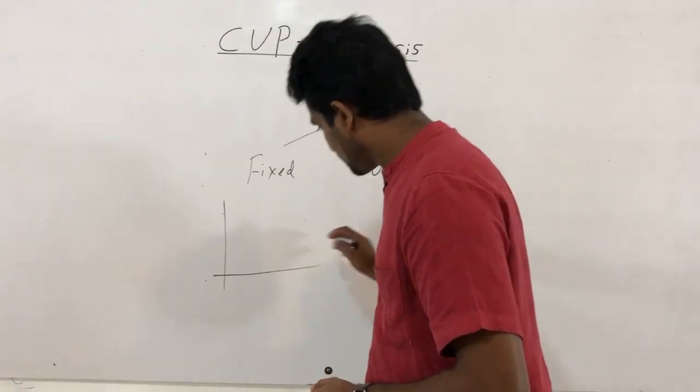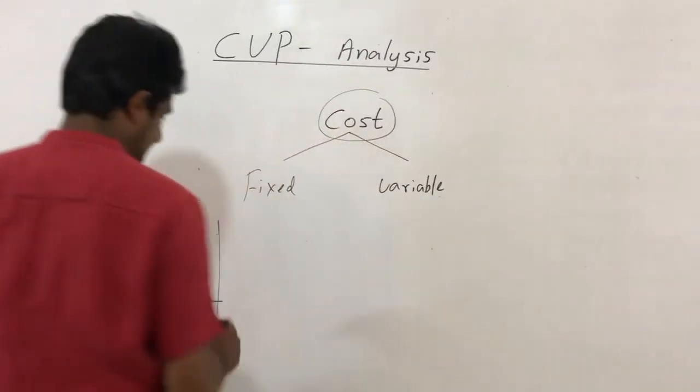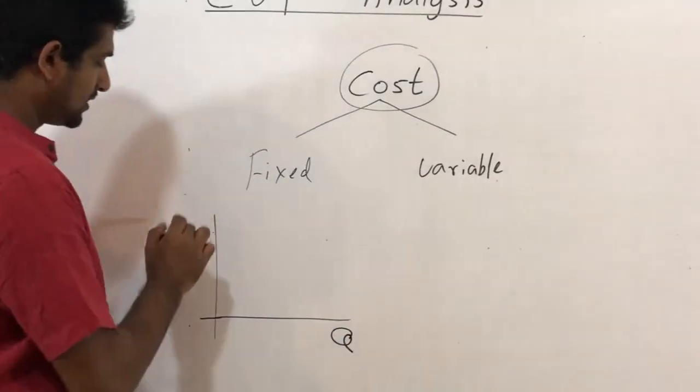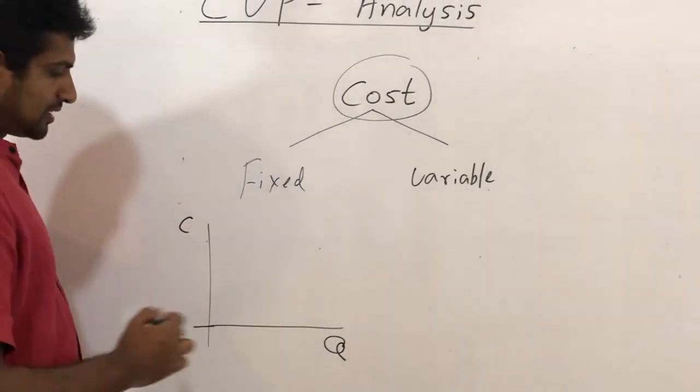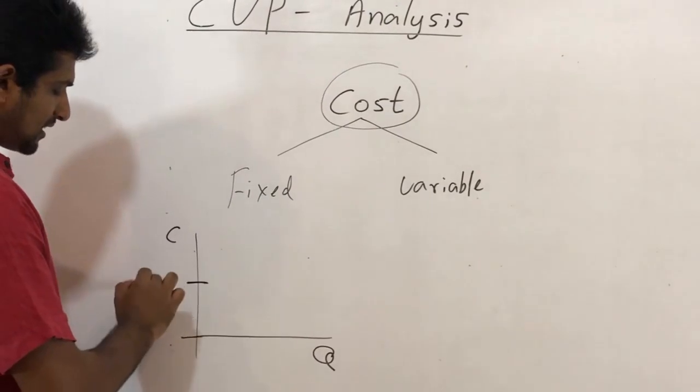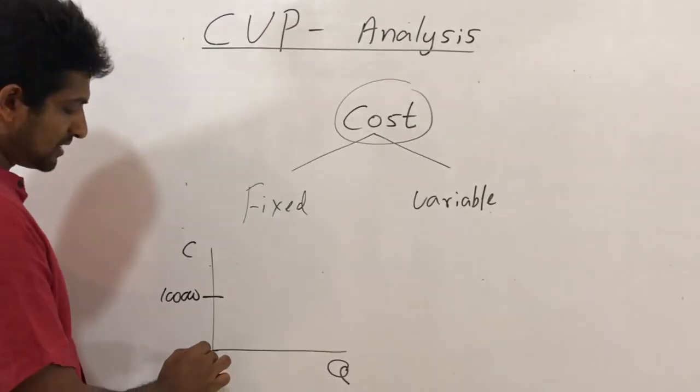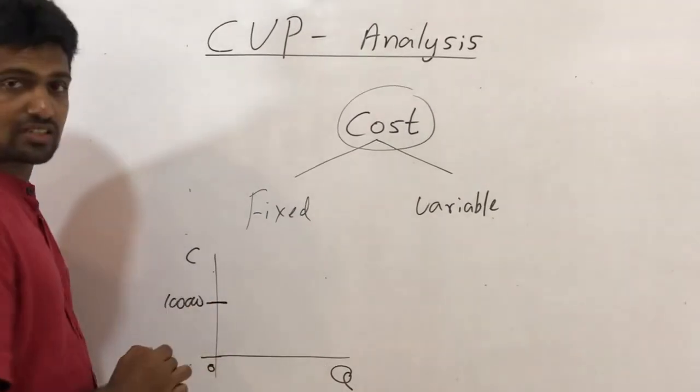If I show you the graph: say this is quantity, this is the cost. Just say the amount you pay is hundred thousand. Although your production is in zero level, still you have to pay this hundred thousand.